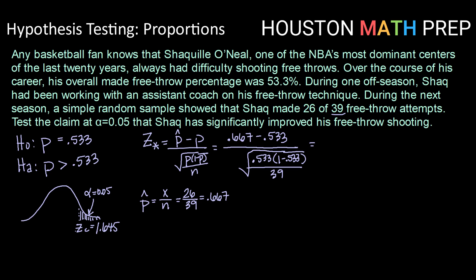Using your calculator to get that, we get 1.673. So our test statistic is 1.673. Comparing that to our Z critical value, it looks like we do fall into the rejection region, since 1.673 is larger than 1.645.